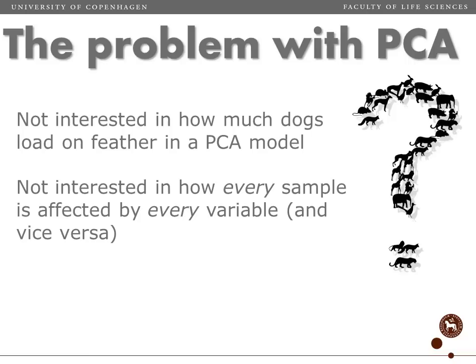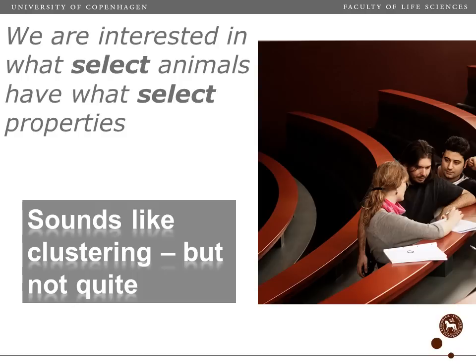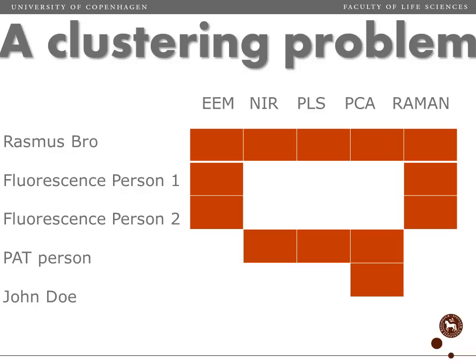The problem might be that we are not really interested in how each and every animal is described by each and every variable. What we are probably interested in is how select animals load on select variables — how a group of animals is represented by a group of variables. That sounds like clustering, but it's not quite clustering, and we can illustrate why.